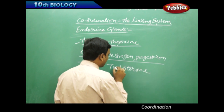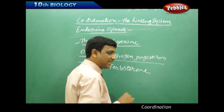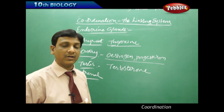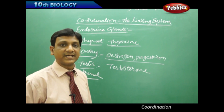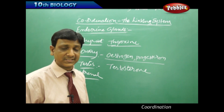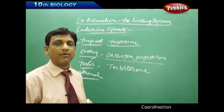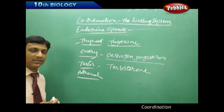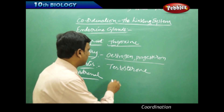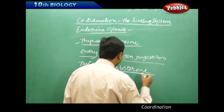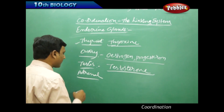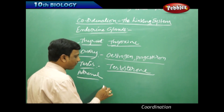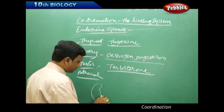The testis produces testosterone. Testosterone helps males develop secondary sexual characters like a mustache or beard, normal sexual activity, development of the reproductive organs, and the formation of sperm. All these secondary sexual characteristics are developed because of the influence of the hormone testosterone.